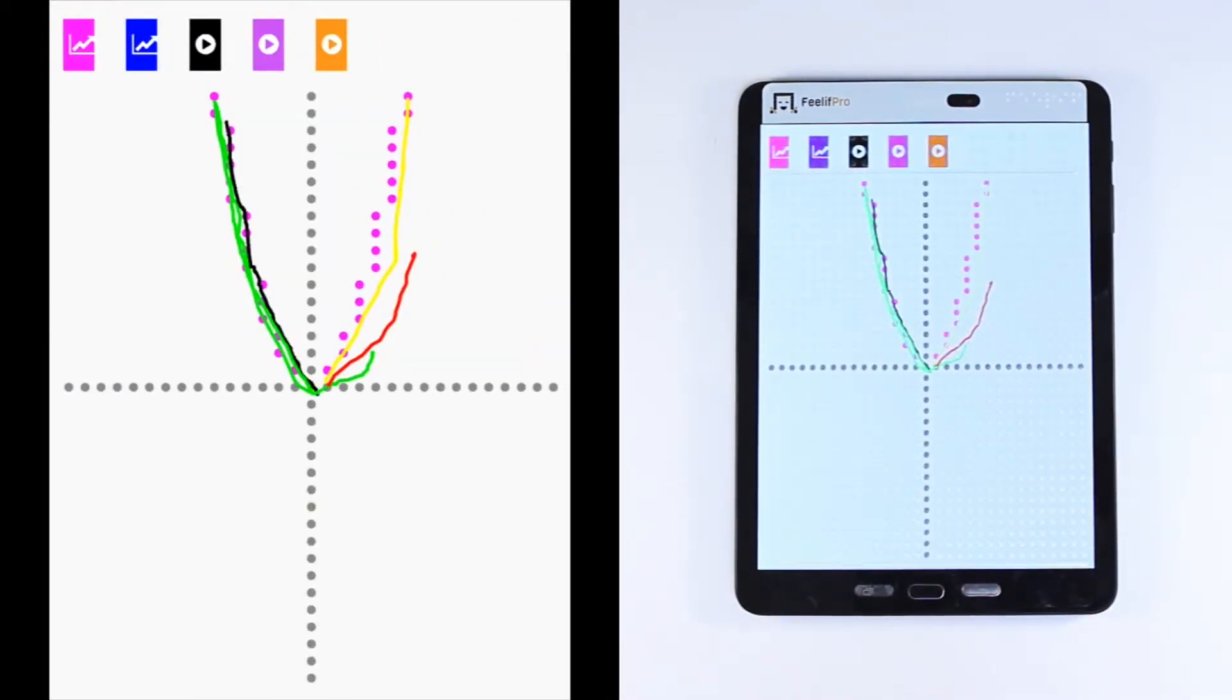You will be presented with a coordinate system, the function and the line that the user made with their finger, so you can see how close or far off the user was when tracing the function.